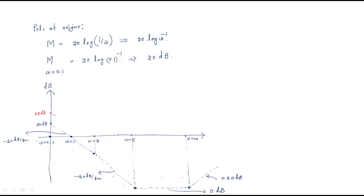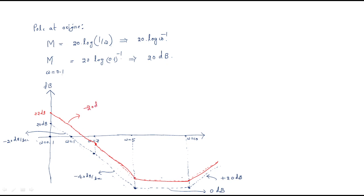The DC gain of 22 dB is added throughout, shifting the entire plot up. So the path follows: starting with the pole, then the slope is −20 dB/decade up to ω = 2, then −40 dB/decade from ω = 2 to ω = 5, then +40 dB/decade from ω = 5 to ω = 10 (slope becomes +20 dB/decade net), and then +20 dB/decade after ω = 10. Remember: −20, −40, +40, and +20 dB/decade are the successive slopes.